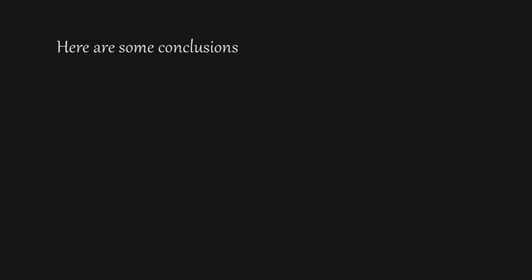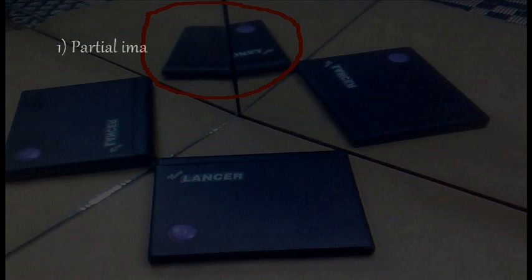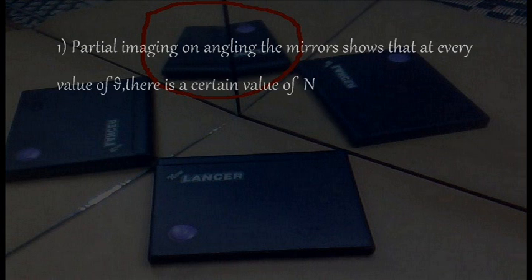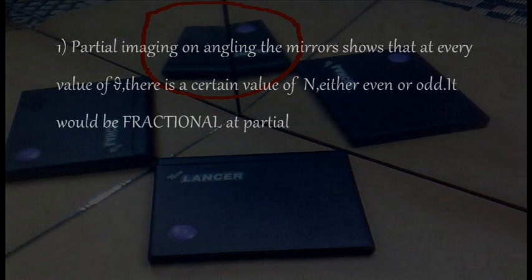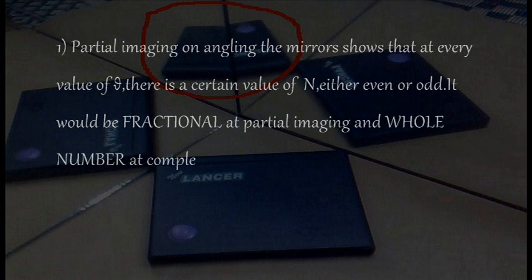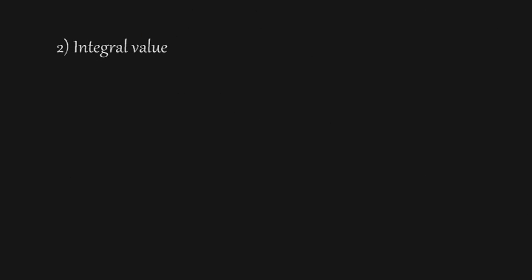Here are some conclusions. Number one: partial imaging when angling the mirrors shows that at every value of θ there is a certain value of n — either even or odd. It would be fractional at partial imaging and a whole number at complete imaging.